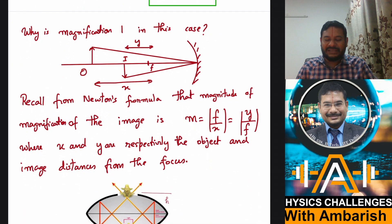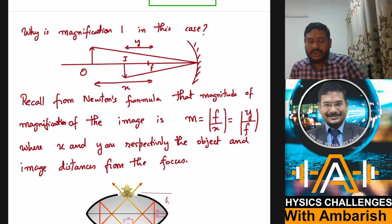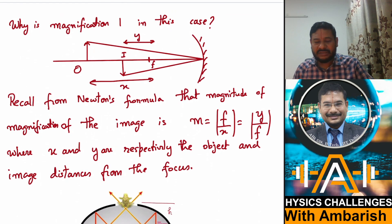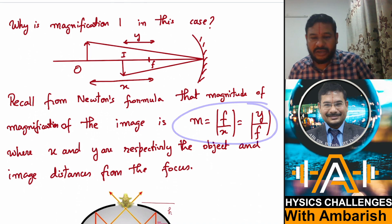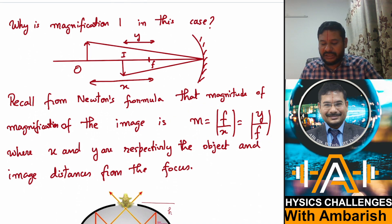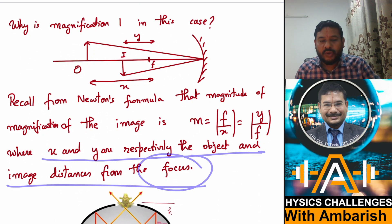Now, I also need to justify why is the magnification one in this case. So you might be aware of Newton's formula for finding the magnification in case of lenses and mirrors. So what is the magnification? So if you have the object distance from the focus, then the magnification is simply focal length divided by the distance of the object from the focus. Or if you have the image distance from the focus, then magnification is simply image distance from the focus divided by the focal length.